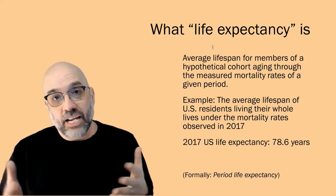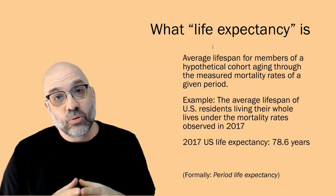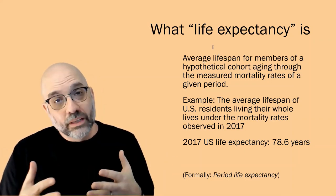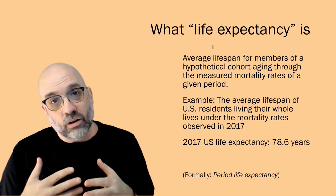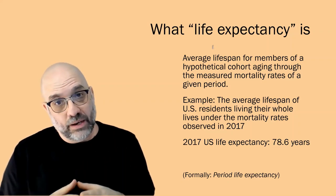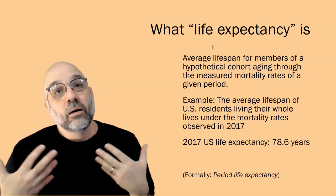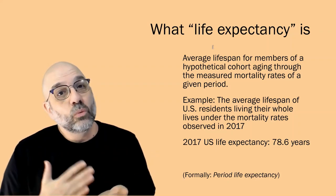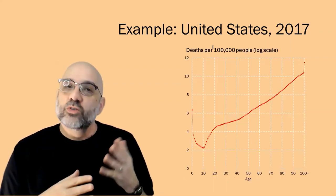In the United States for 2017, the answer was 78.6 years. Formally, demographers call what I'm talking about period life expectancy. It is the life expectancy of a hypothetical cohort living through one period in time.